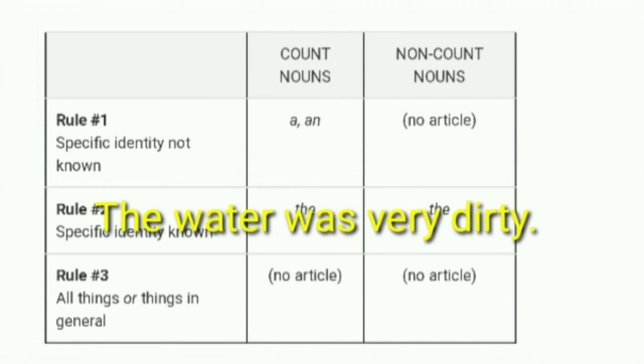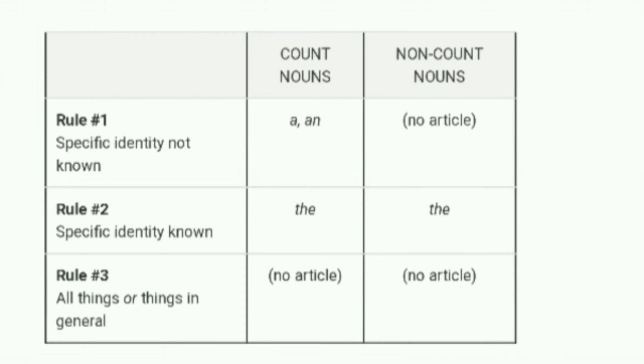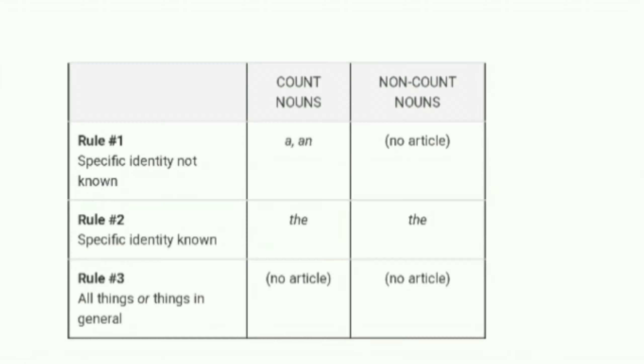Teesra rule yeh batata hai ki jahan pe hum kisi aise noun ke baare mein baat kar rahe hain jo kisi na kisi way mein bahut general ho aur jiska use hum apni life mein daily karte hain, toh aise situation mein hum article ko skip kar dete hain. For example, 'I visit temple everyday' — yahan 'a temple' ya 'the temple' nahi lagayenge kyunki temple ek aisa place ka naam hai jahan hum frequently jaate hain. Is tarah hum aise noun ke pahle kisi bhi article ka use nahi karenge.